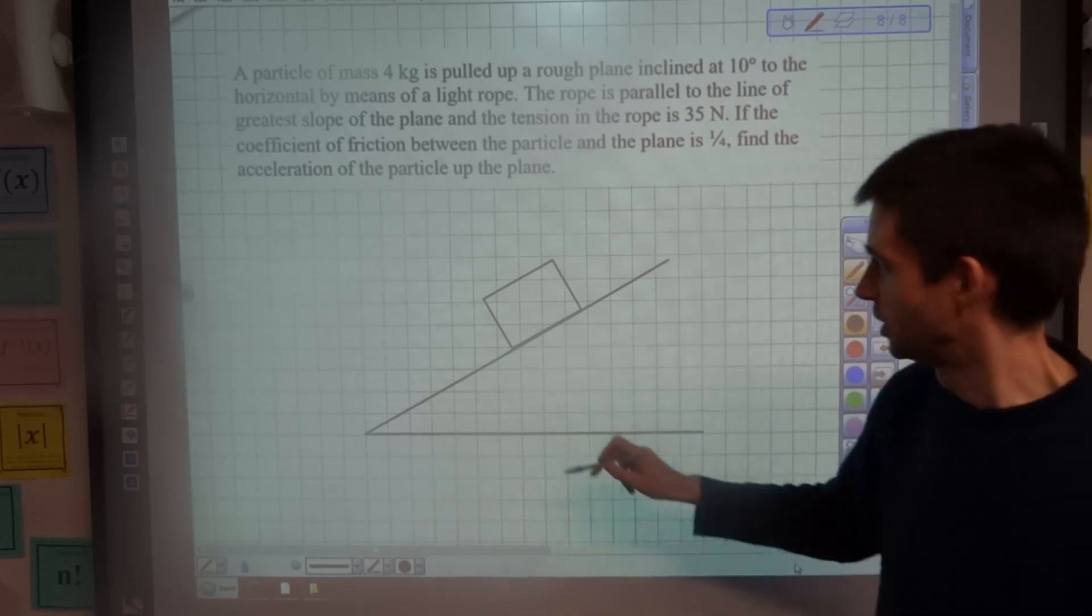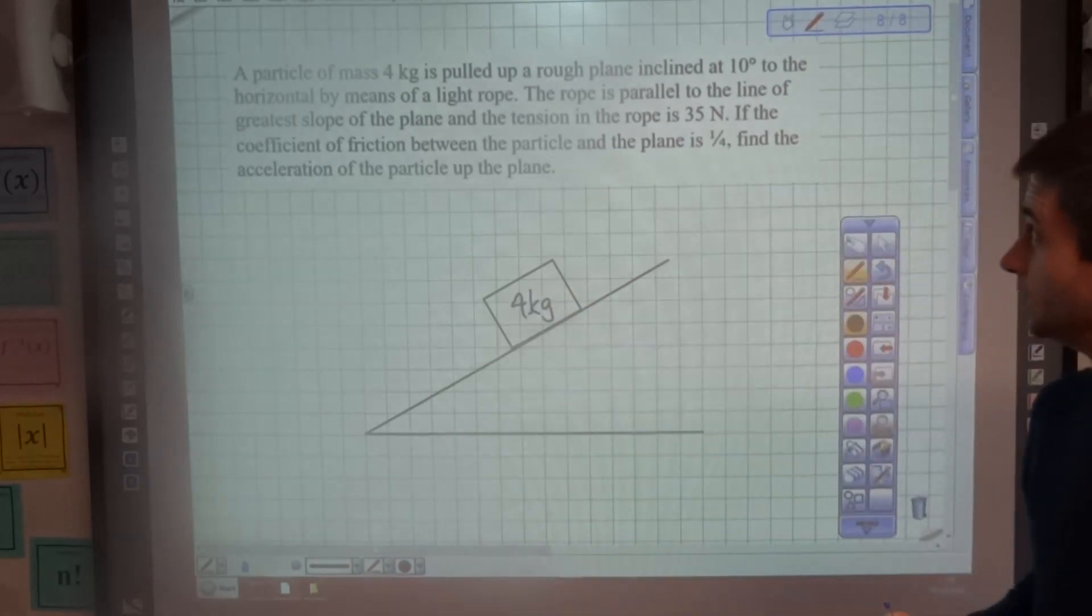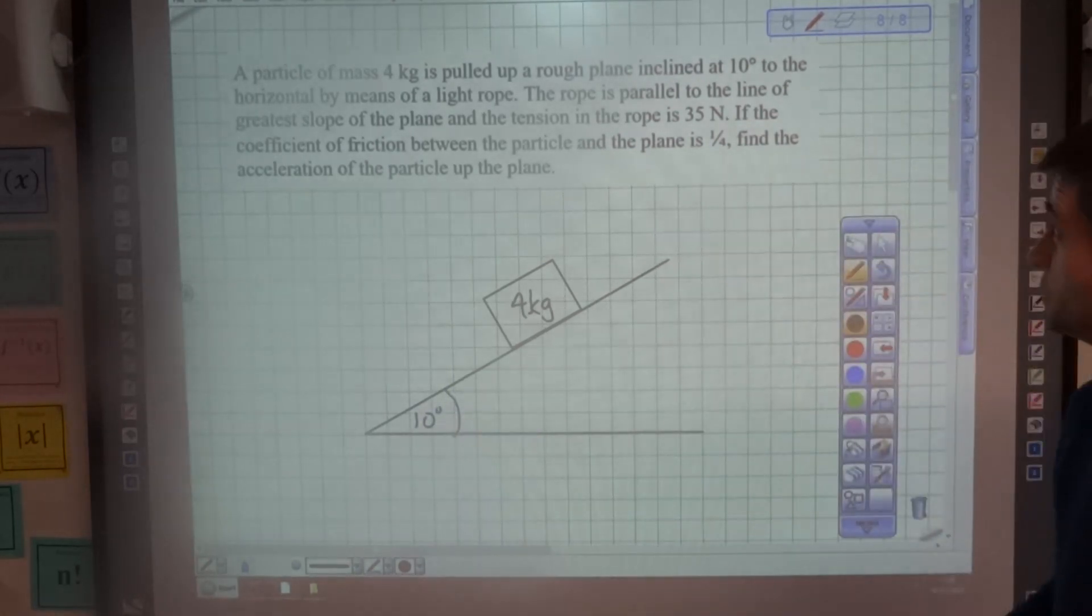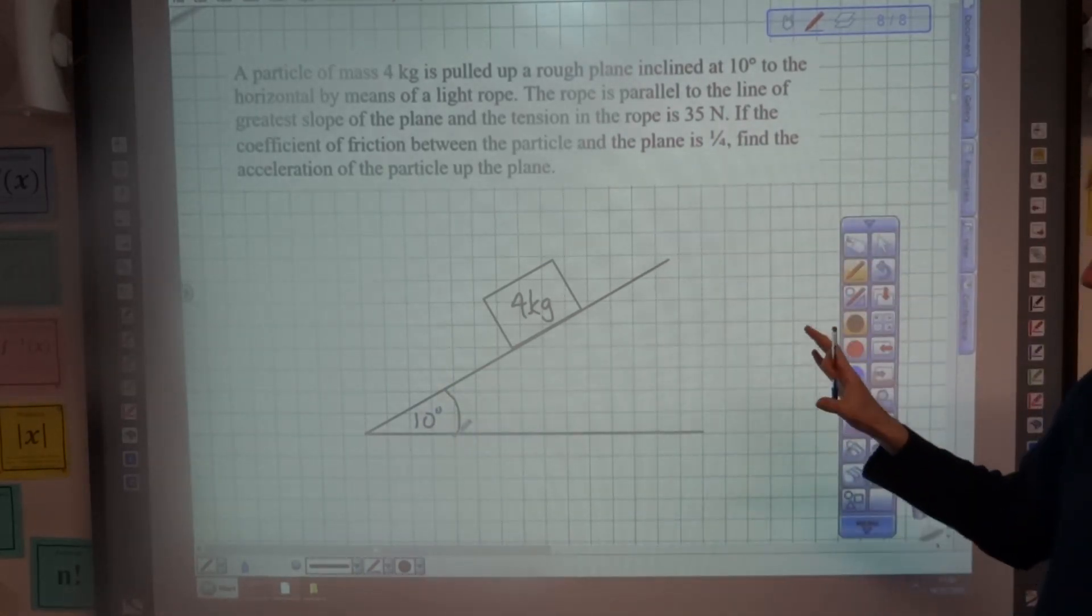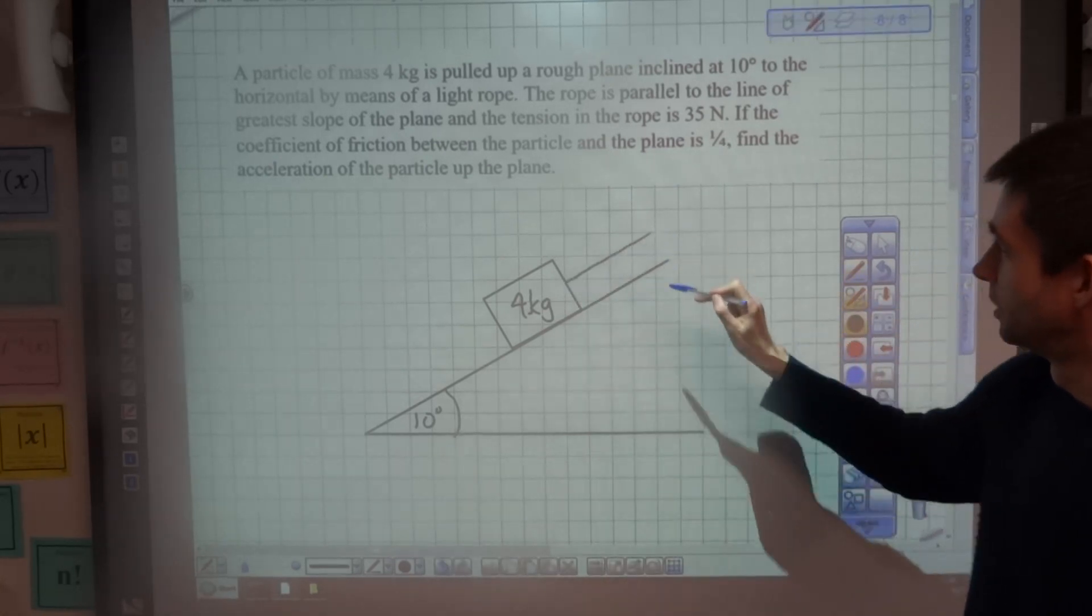Right, let's start labeling some information. I've got this particle which has a mass of four kilograms. I'm told that it's inclined at 10 degrees to the horizontal, and it's being pulled up the slope by means of a light rope, so I can draw that in there.